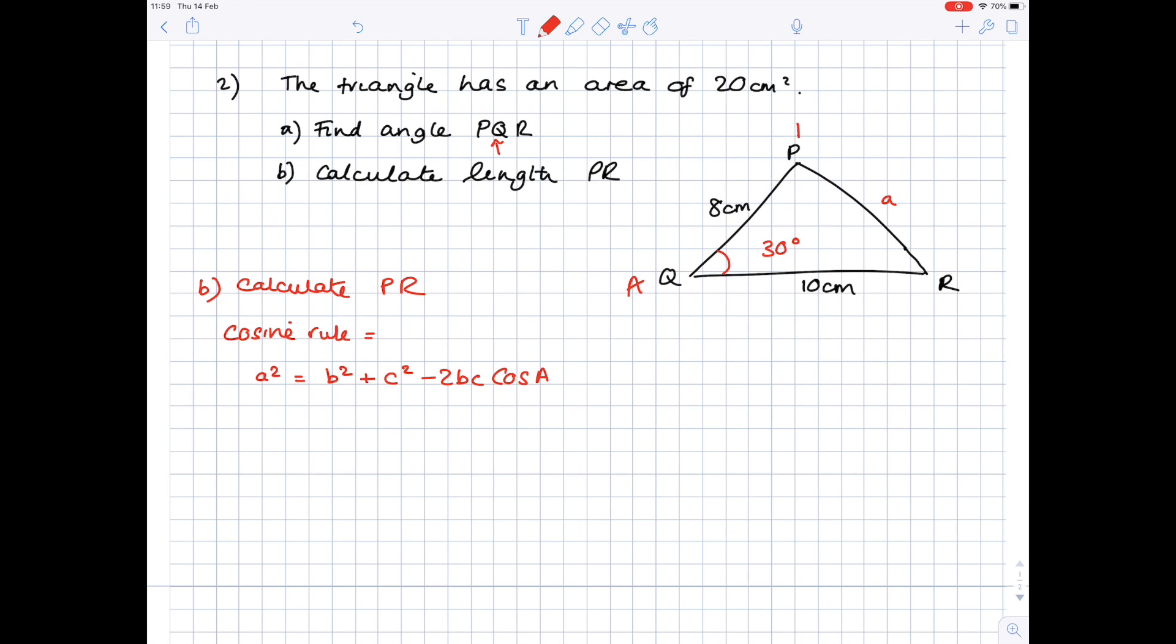And then it doesn't matter how I do the others. But I'm going to call that B. So that becomes side B. And that's C. So that becomes side C. So now I'm ready to work out what side A is. Because after all, that is side PR. So I'm going to write a squared equals b squared. So that's 10 squared plus 8 squared minus 2 times 8 times 10 times cos 30.